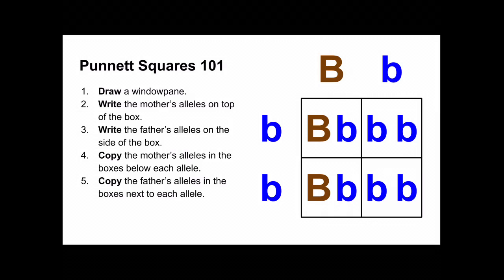We have the mother's alleles on the top, father's alleles on the side, and the four possible combination of alleles or genotypes for our offspring.